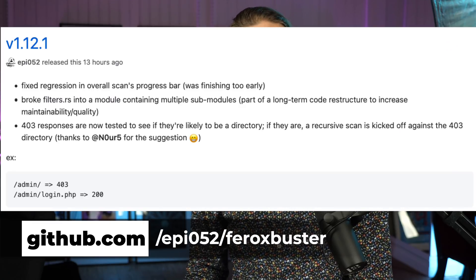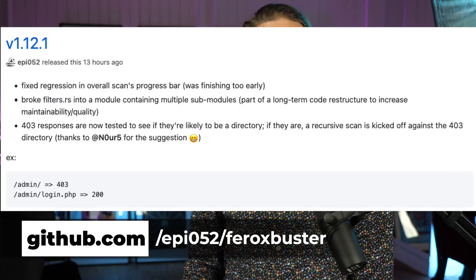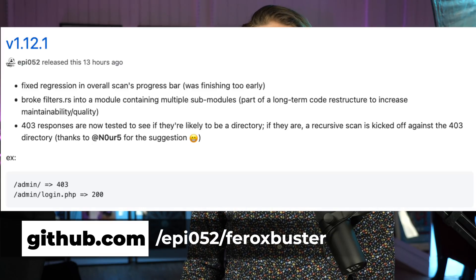A while back I talked about Ferox Buster, and Epi just updated it to the latest version — currently running on version 1.12.1. A really cool update this time is that any 403 responses you get could possibly be a directory. What it's doing now is kicking off a recursive scan automatically against all 403s to see if it's actually a directory and if there are any files behind it. I think this is a really nice feature. If you haven't tried Ferox Buster out, I would suggest you try it now.